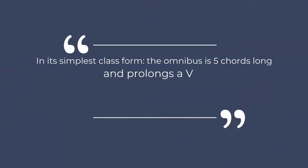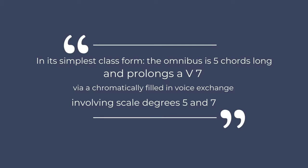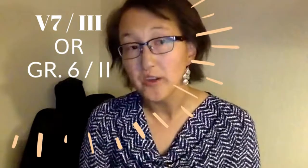This video essentially outlines a lot of the article's findings, starting with the music from before what we'll analyze, giving us the tools to analyze thereafter. She describes it as, quote, in its simplest classic form, the omnibus is a five-chord-long progression and prolongs a dominant seventh via a chromatically filled-in voice exchange involving scale degrees five and seven. So we're going to check out this chord progression as seen in example number two.